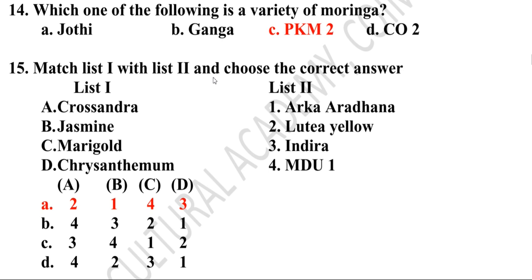Fifteenth question: Match list one with list two and choose the correct answer. Crossandra — Lutea; yellow jasmine — Arka Aradhana; marigold — MDU1; tuberose — Suvasini. The correct answer is option A: two, one, two, three.